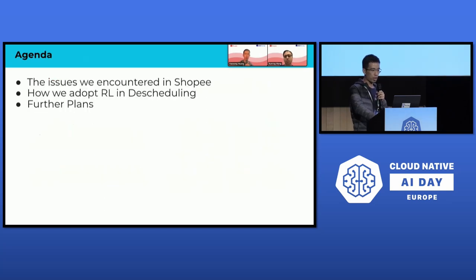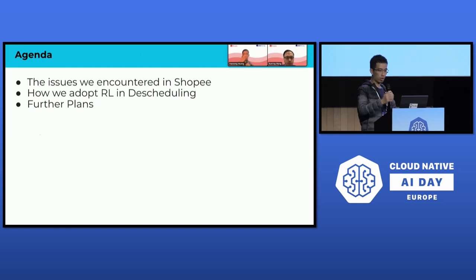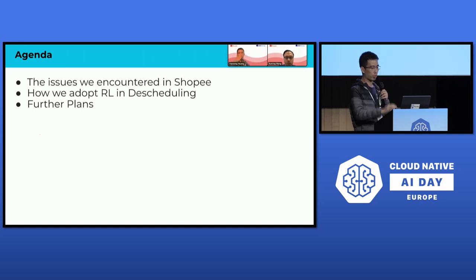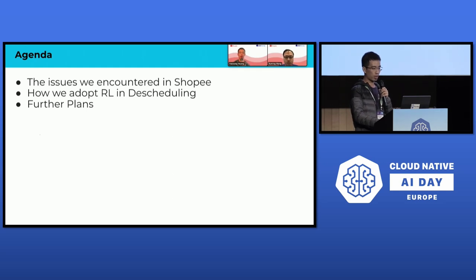For today's talk, Xu Ming will introduce the issues we encounter in Shopee's scenarios and how we use the traditional way to address them. Then I will continue to share how we explore reinforcement learning to address the problems we encountered. At the end, I will also introduce the disadvantages of reinforcement learning we found when rolling out into production, and how we plan to address them in the future. Now let me pass to Xu Ming to share his part.